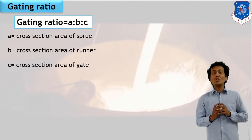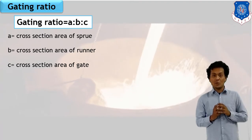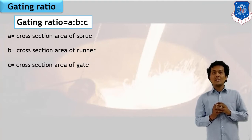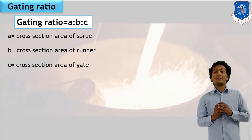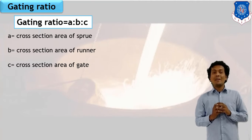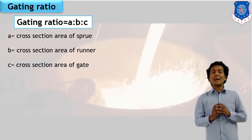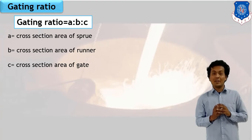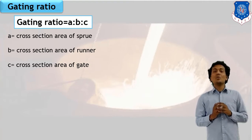What do we mean by Gating Ratio? The Gating Ratio can be expressed as A to B to C — there will be three digits. The first one, A, is an indication of the cross-sectional area of the sprue. The second digit, B, is an indication of the cross-sectional area of the runner. The third digit, C, is an indication of the cross-sectional area of the gate. So there will be three digits in sequence A, B, C, indicating cross-sectional areas.